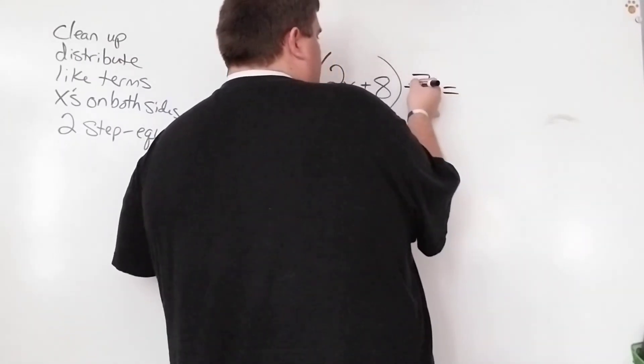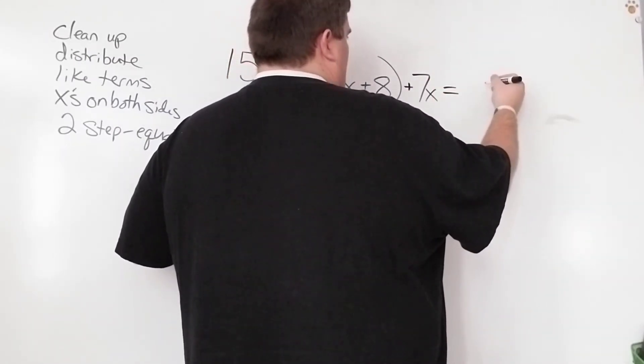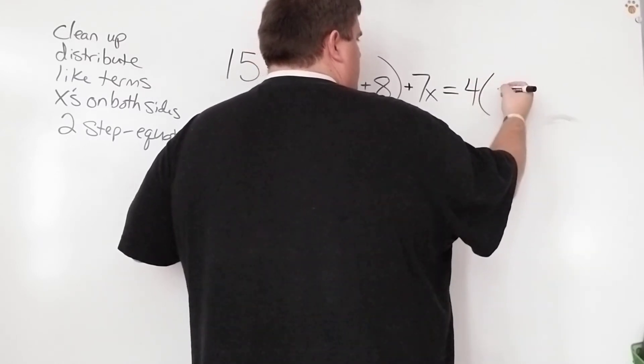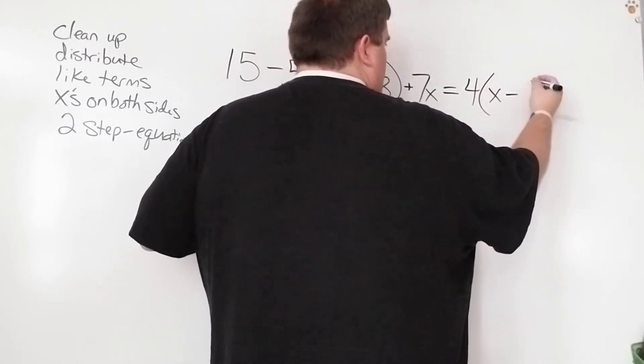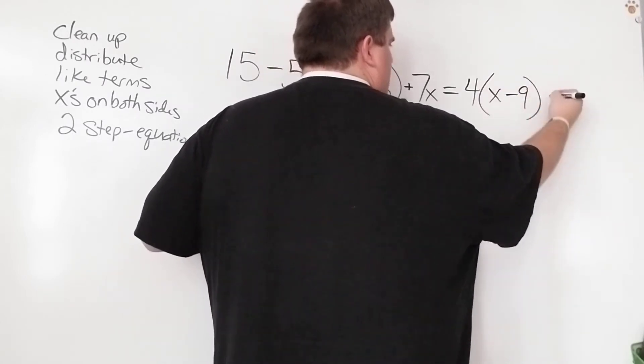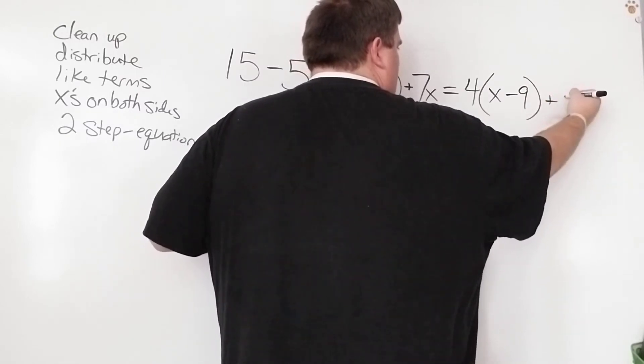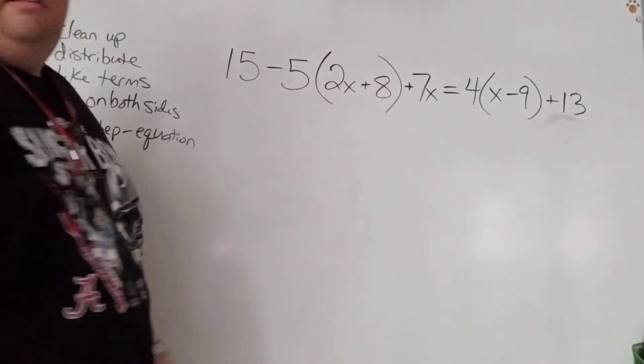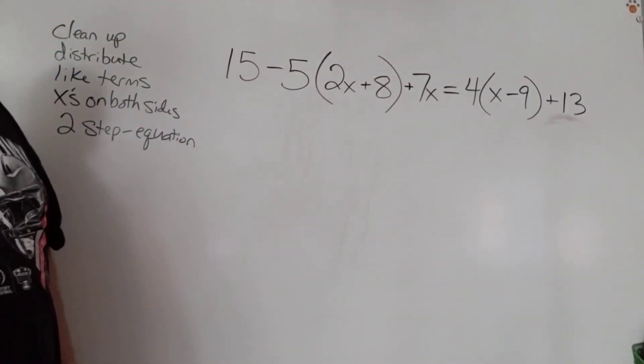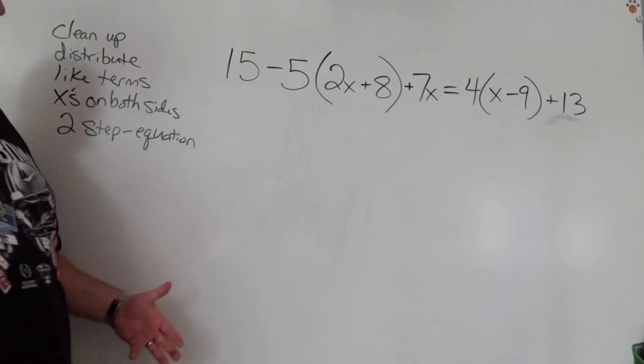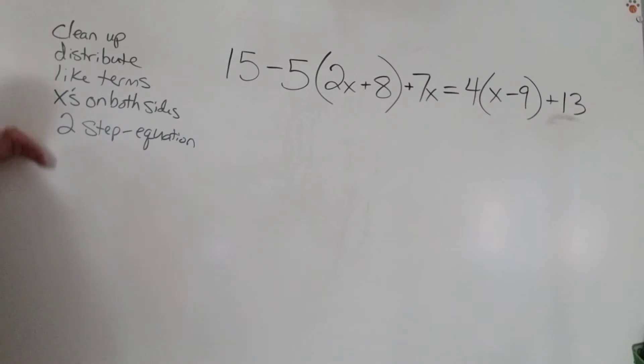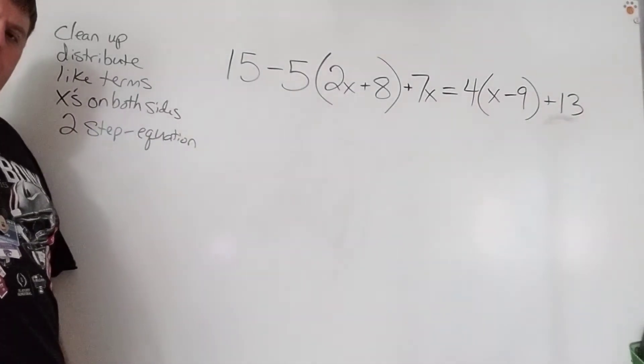Let's go 15 minus 7x equals. Let's make that plus some x. Equals. And we'll go 4 times the quantity x minus 9 plus 13. All right. Now we are starting to get into some crazy long equations.